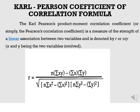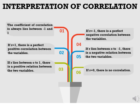Karl Pearson is the author of this formula, which is given by: r = [n·Σxy − Σx·Σy] divided by the square root of [n·Σx² − (Σx)²] multiplied by the square root of [n·Σy² − (Σy)²]. Here, x and y are the given data, and n is the number of items given.